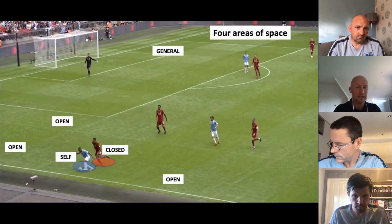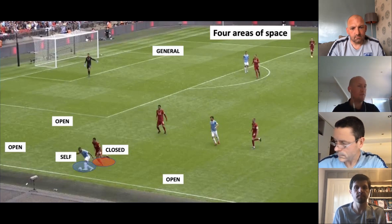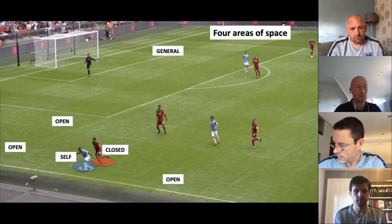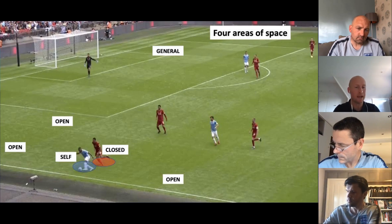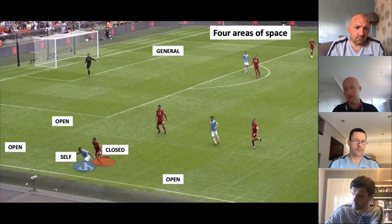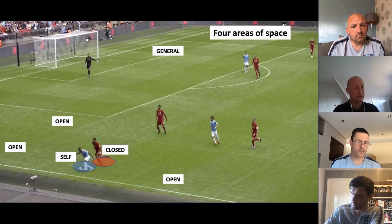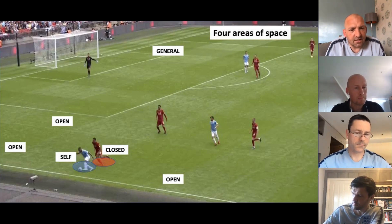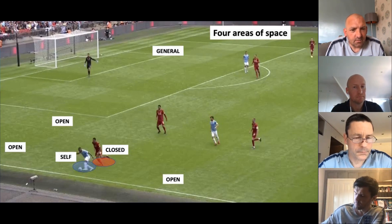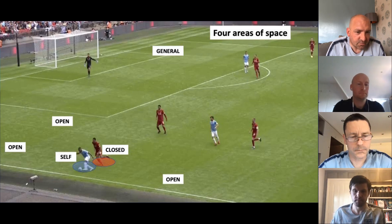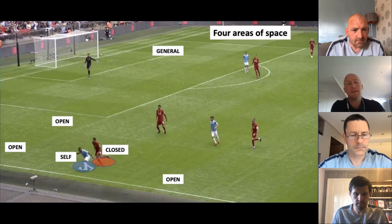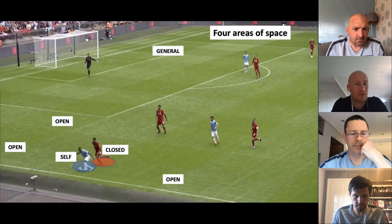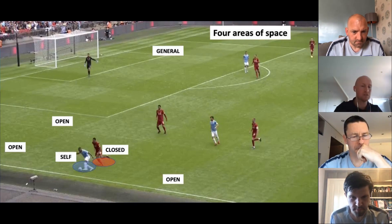Another key area is closed space — a space we want to try and avoid because someone else is in it, so you're doing that dodging movement, or it's a space that we want to invade. Depending on what we're trying to do, it heavily impacts how we actually do it. If we're trying to avoid it, you might drop your shoulder and accelerate away. If we're trying to invade it, it might be accelerating to decelerate, to slow down, to nullify the opposition. In this Sterling example, he's trying to prevent Alexander-Arnold entering his self-space, while Alexander-Arnold is trying to invade on his space.